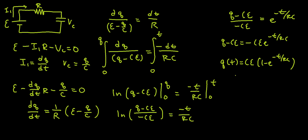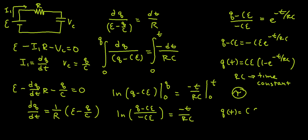We know that RC is our time constant, and this is written as tau. So I'm going to rewrite my expression as Q of t equals C·epsilon times (1 minus e to the negative t over tau).